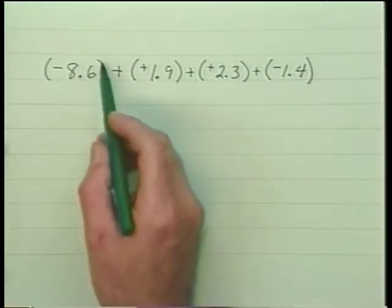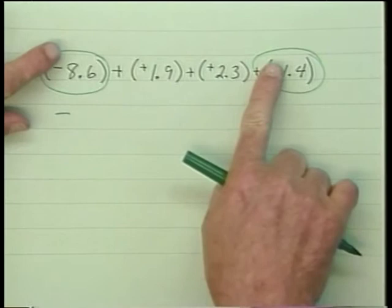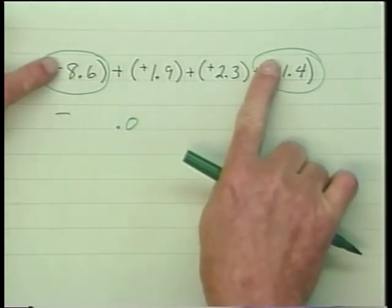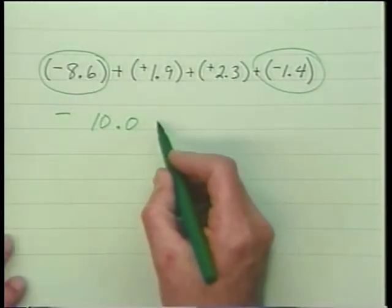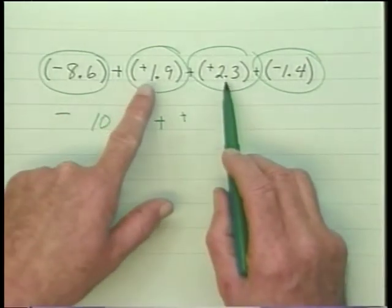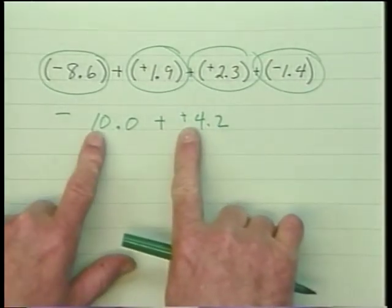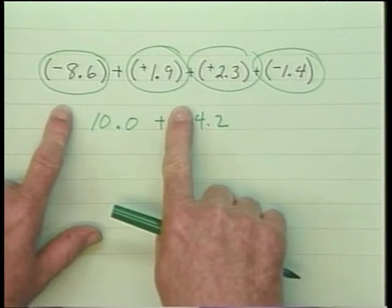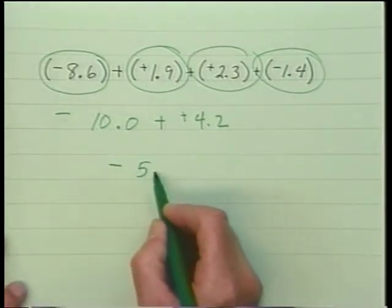The same applies with decimals. If you're adding a long stream, since the first is negative, identify all the negatives — the sum of two negatives will be negative. Add their absolute values using decimal arithmetic, which in this case is 10.0. Then add all of the positive sign numbers — that sum will be positive: 1.9 plus 2.3 is 4.2. Now we're adding unlike signs, so we take the difference. Since 10 absolute value-wise is larger than 4.2, the answer will take its sign, which is negative. Taking the difference between these two gives me 5.8.